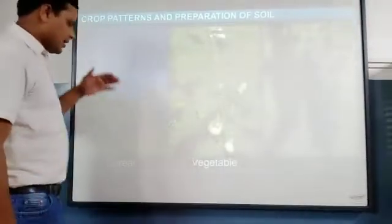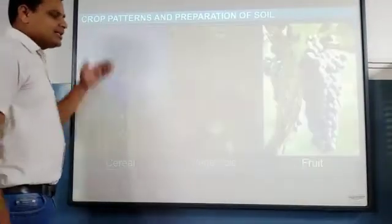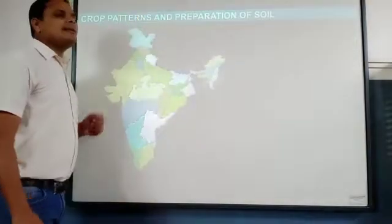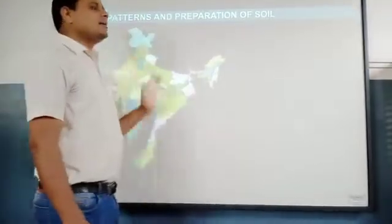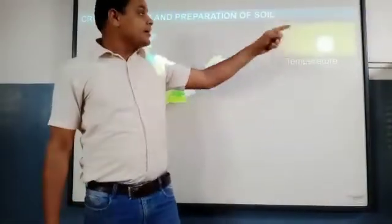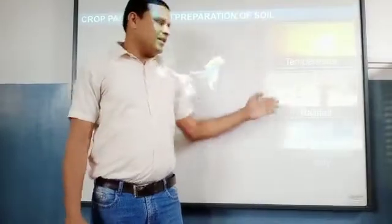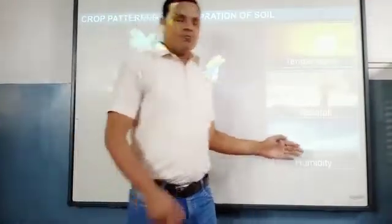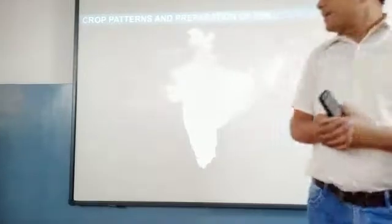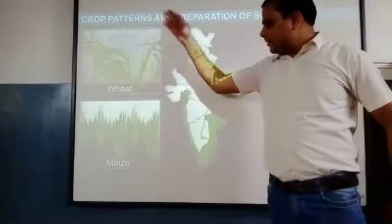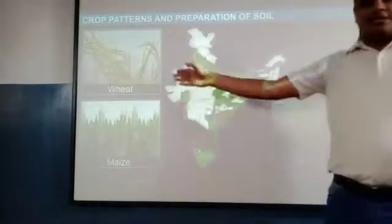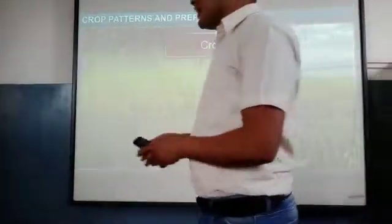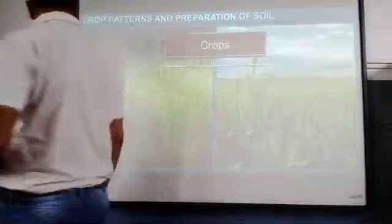These are edible crops. Some are cereals, some are vegetables, some are fruits. In India, different places receive different temperatures, different rainfall, and different humidity. So in different parts, we can grow wheat, rice, or different types of crops depending on the land.